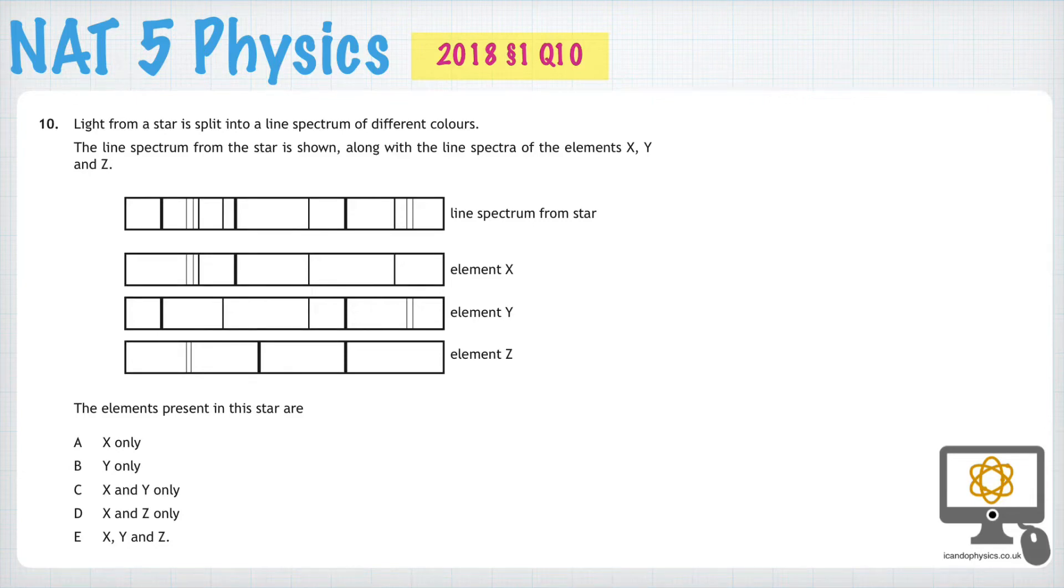Question 10 from the 2018 National Science Physics paper is about the line spectra of different stars and how to use that to identify the elements in a star. Here we have the line spectra from a star right here and there are three elements that we have to try and identify - are they in the star or not.